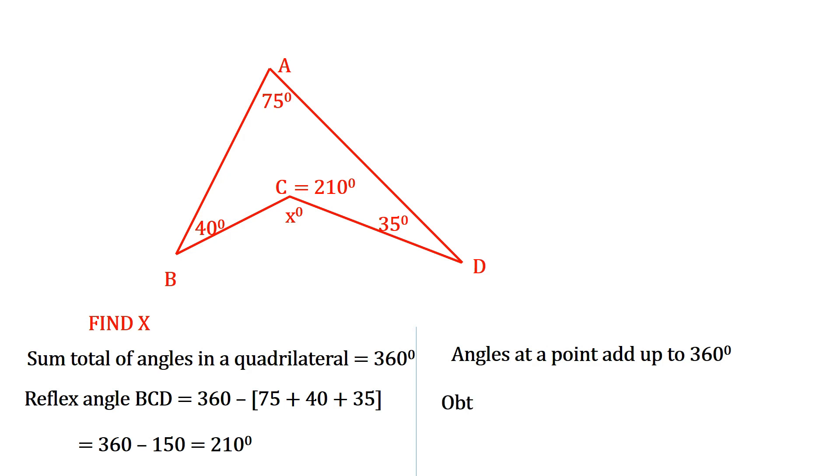So to find X, we're going to take 360 degrees minus 210 degrees, and that gives us 150 degrees. That's the final answer to our question.